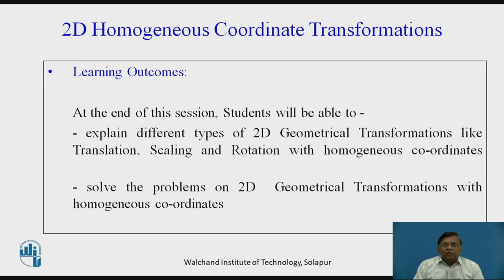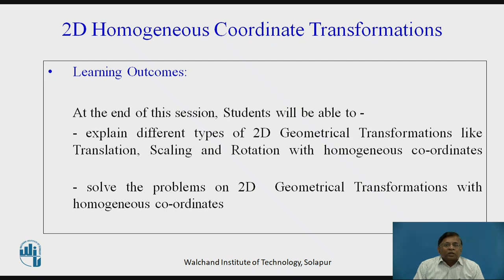Talking about the learning outcomes, at the end of this session, viewers are expected to understand the explanation on different types of two-dimensional geometric transformations, more particularly about translation, scaling, and rotation, and that too in homogeneous coordinate systems.